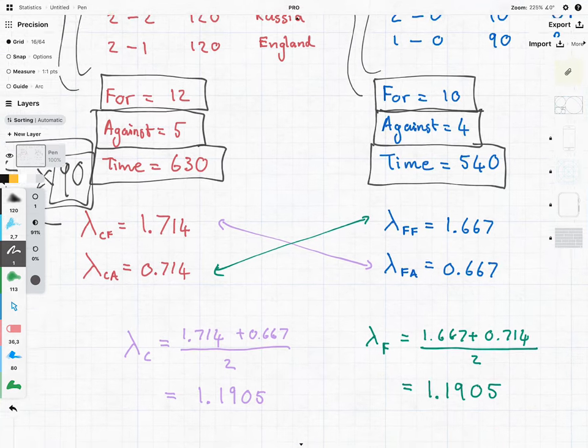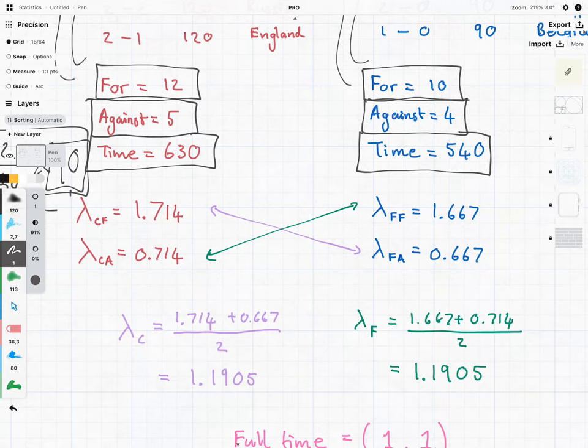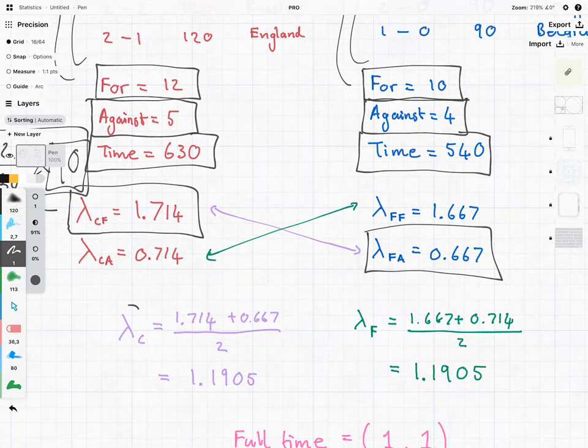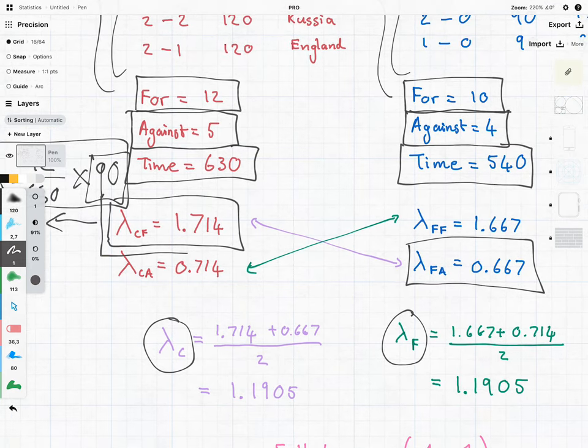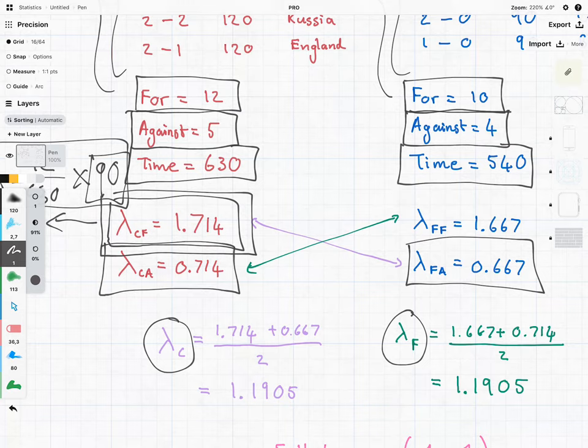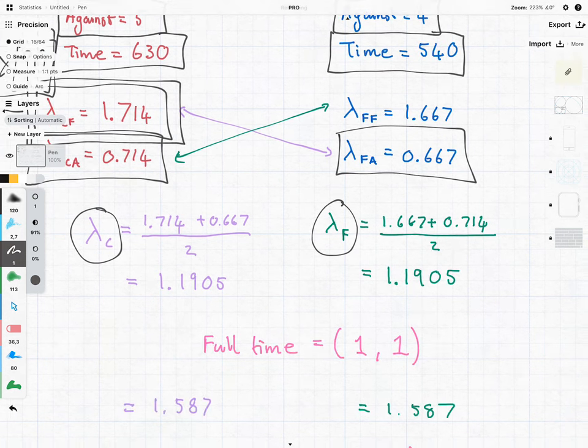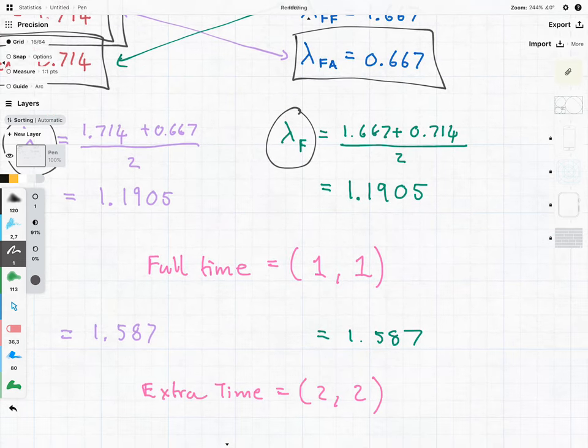Then what I've done to determine Croatia's score is I've combined their goals for with the goals that France is going to concede to create a lambda for Croatia's score, and I've done the same with France to get their score. And the interesting thing is, though Croatia scores a slightly higher rate of goals than France, they also concede a slightly higher rate of goals to France. And at the end of the day, both of these teams have exactly the same lambdas, which means the expected full-time score is going to be 1-1 after 90 minutes, which means we're going to go to extra time.